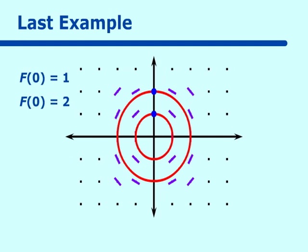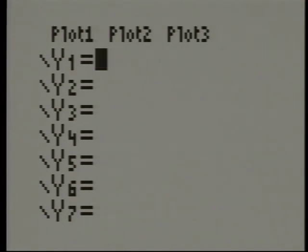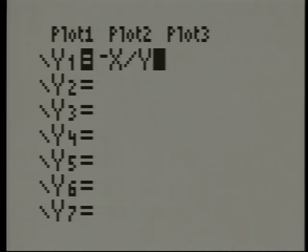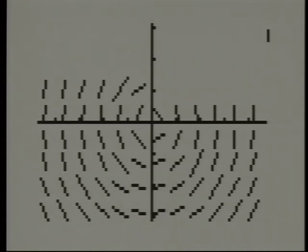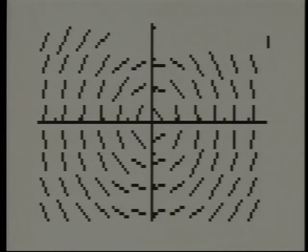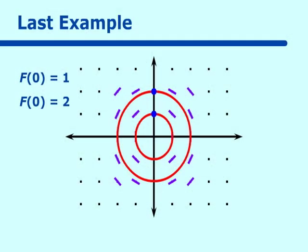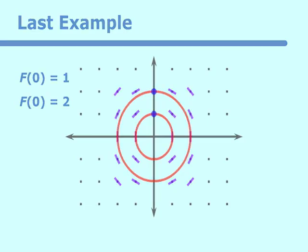How would we do that on our calculator? This time we have to put in y equal to negative x divided by y and run the program, and you'll see those circles forming. In this lesson, you have learned to draw slope fields and determine particular solutions. Many of the questions ask you to do this, but you'll also have matching questions, which are just the general form on slope fields. This concludes your lesson on slope fields.